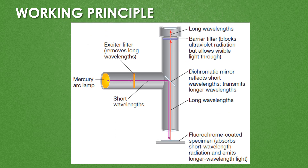Regarding the working principle: the light source is the mercury arc lamp, which produces an intense beam of light about 10 to 100 times brighter than normal lamps. The light from the mercury vapour lamp passes through the exciter filter. Normally the light from the mercury arc lamp has a long wavelength, but after passing through the exciter filter, the long wavelengths are removed and converted into short wavelength light.